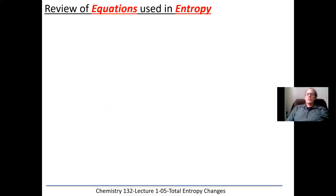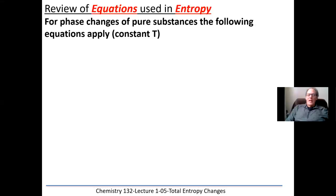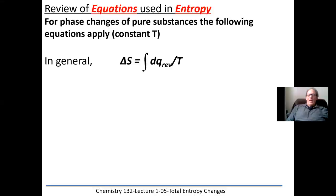So let's take a look at some of the equations we're going to use in entropy. We looked at these last lecture. For phase changes of pure substances, we're going to apply these equations. In general, entropy change, which is a state function, is always equal to dQ reversible divided by temperature — Q being, of course, heat in a reversible change. And we're going to integrate that dQ reversible over temperature.